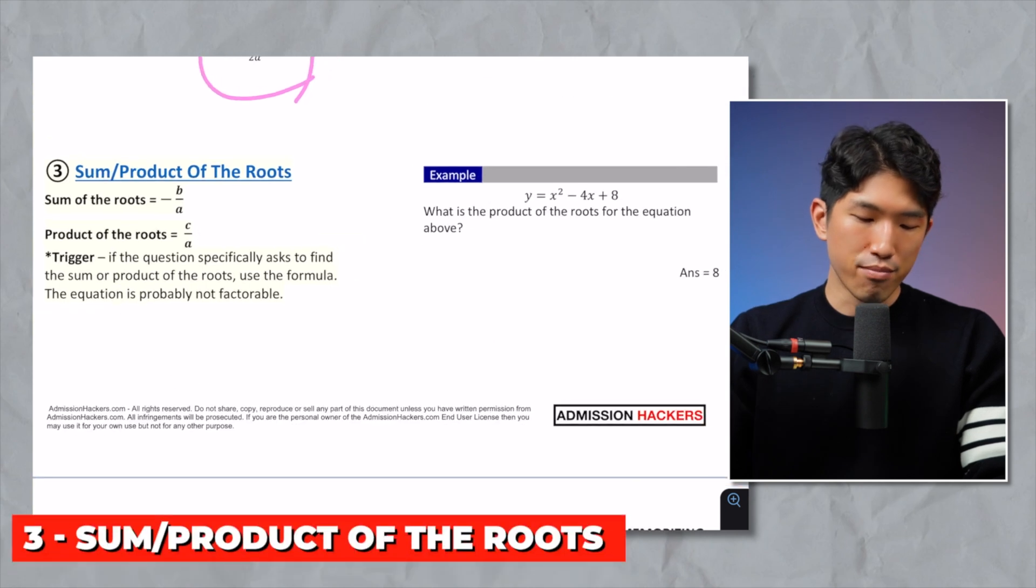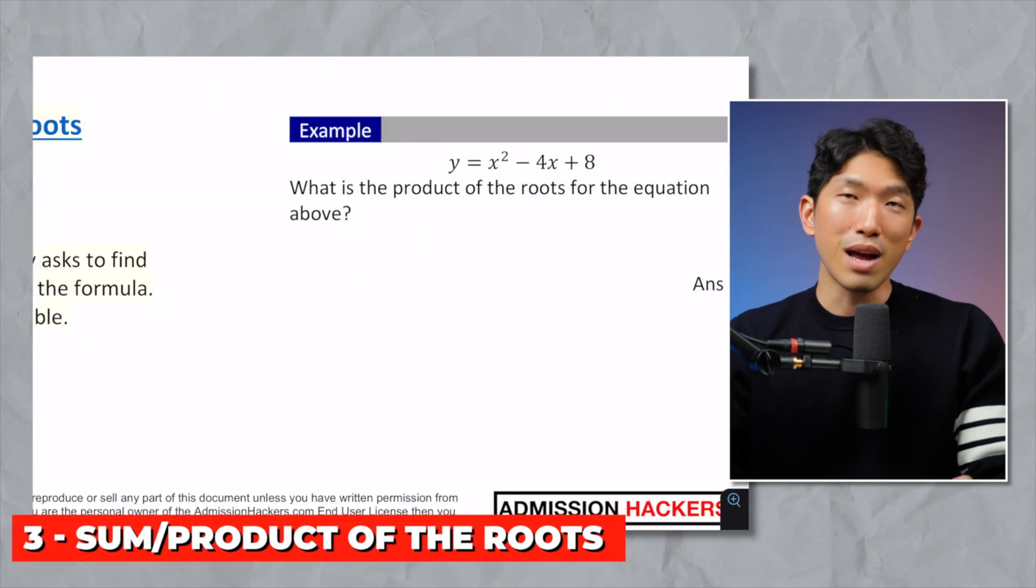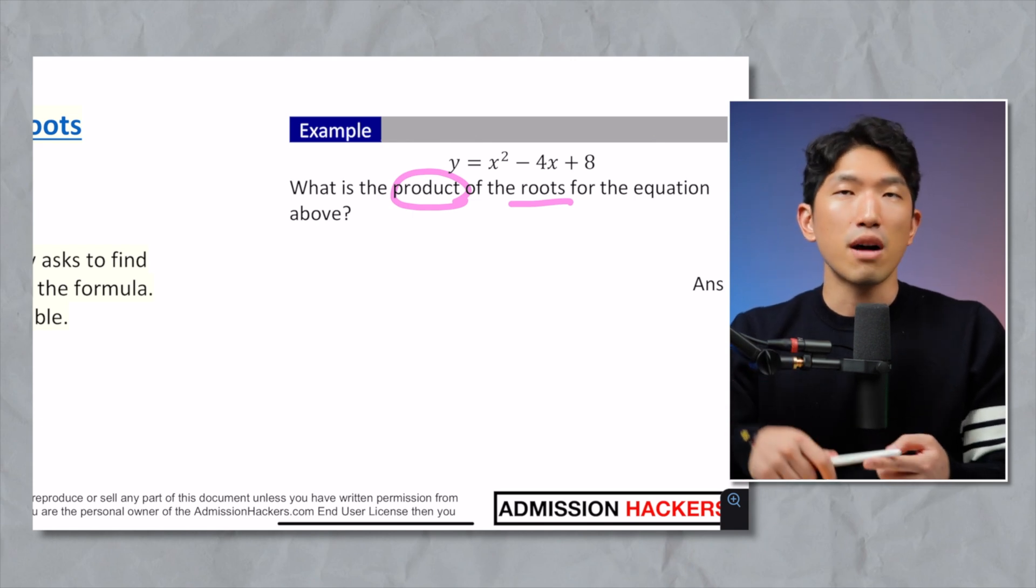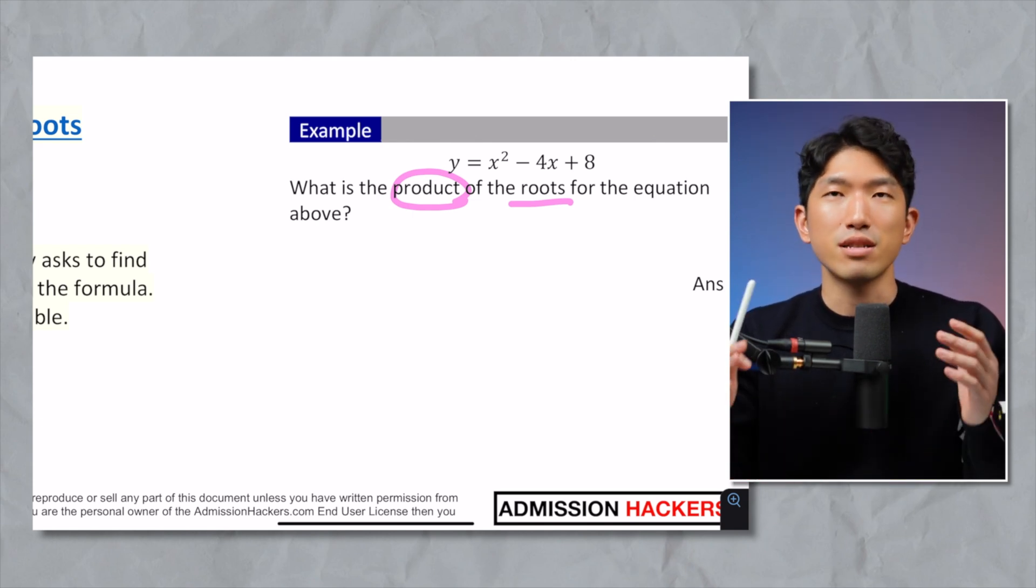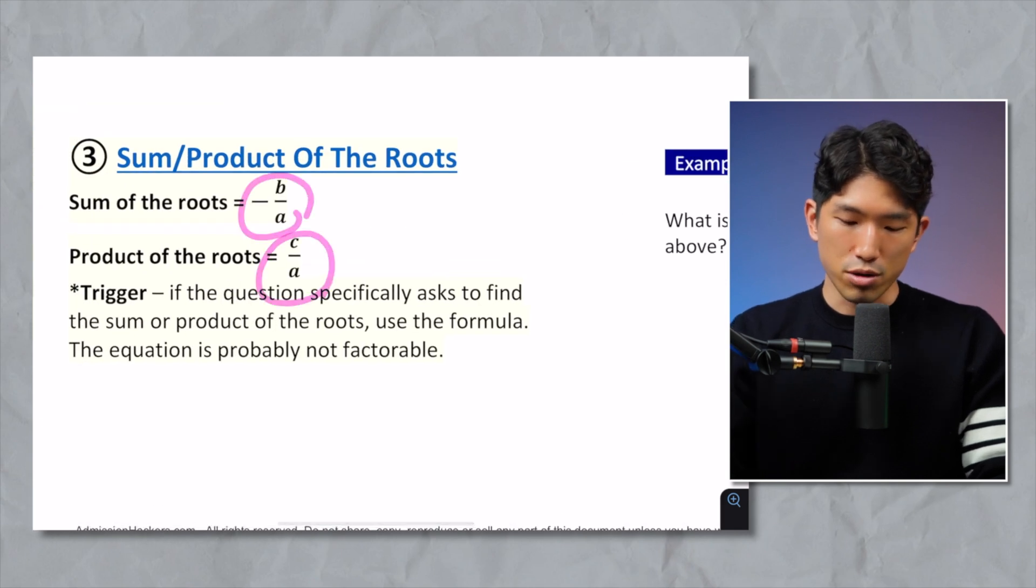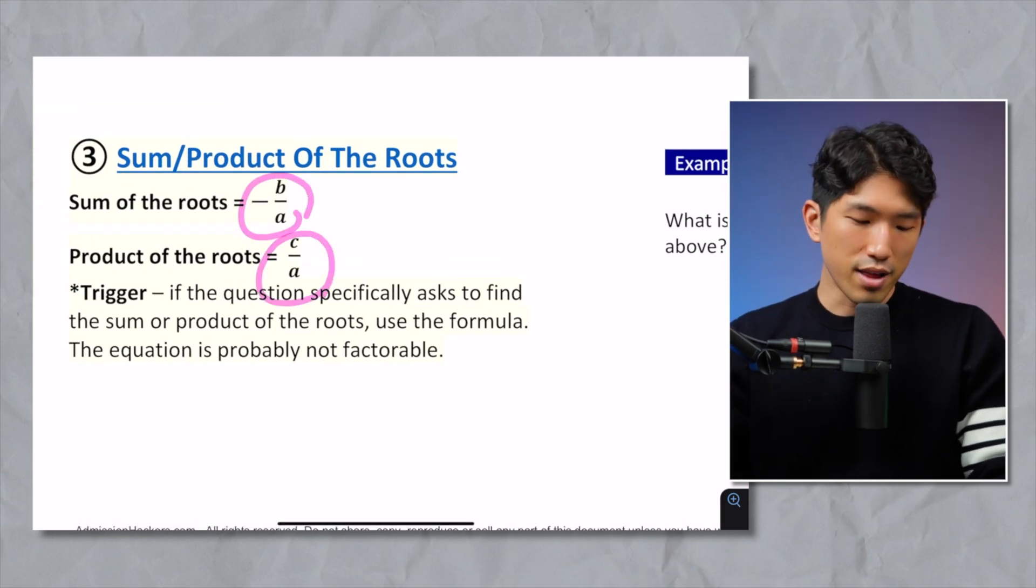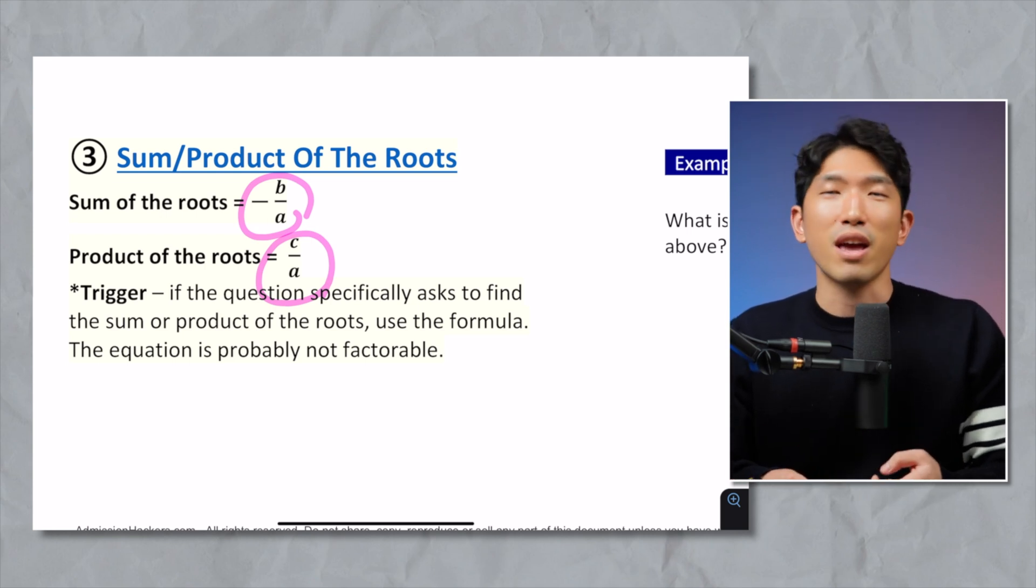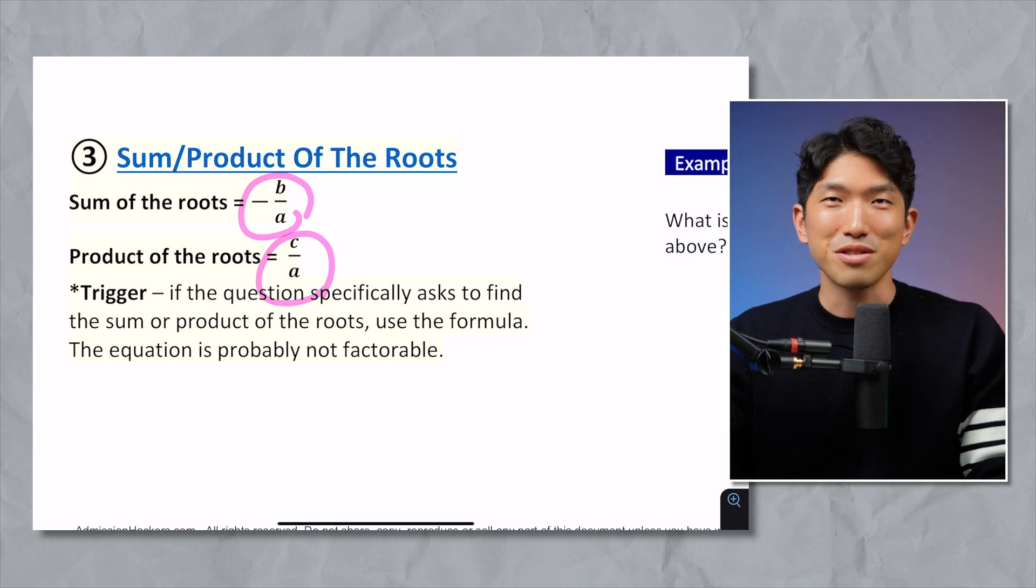Next is going to be the sum and product of the roots formula. So sometimes SAT is going to ask you to find the roots individually, or they're going to ask you to find it together, as in what's the product of the roots, right? And if they are asking for sum or product, don't bother factoring because the equation is not going to be factorable, go straight into the sum or the product formula, which is going to be right here. And occasionally, students ask John, I get confused on whether the sum is minus b over a or the product is minus b over a. How can I not get confused on this? Just review 6,000 more times and you'll be good to go.